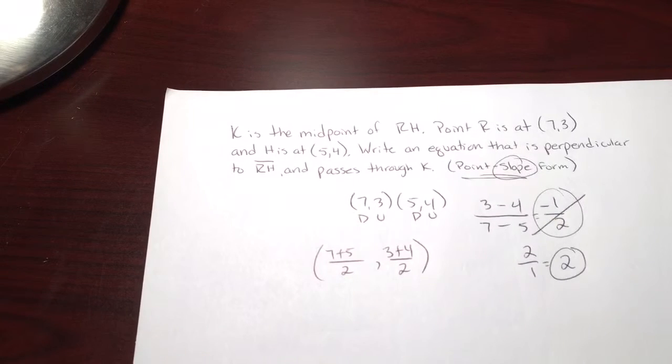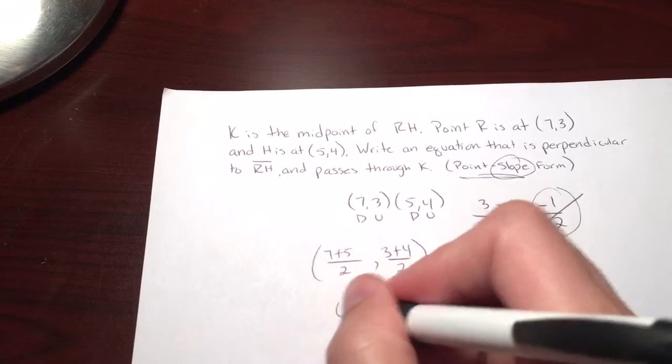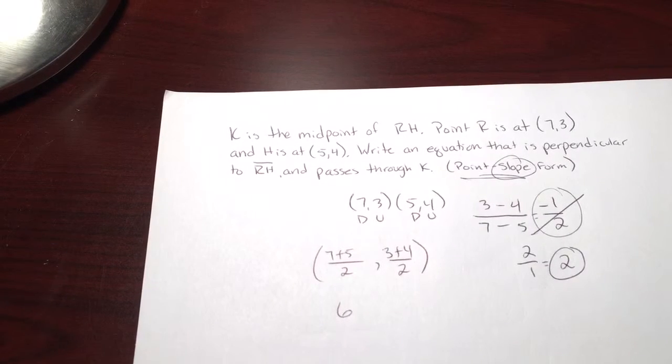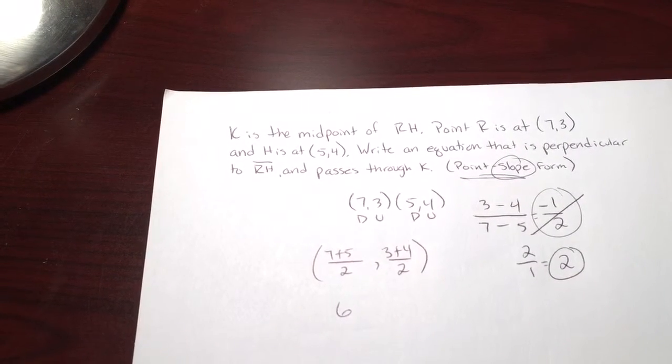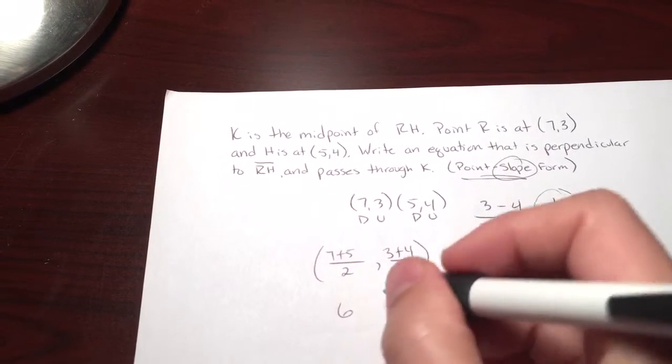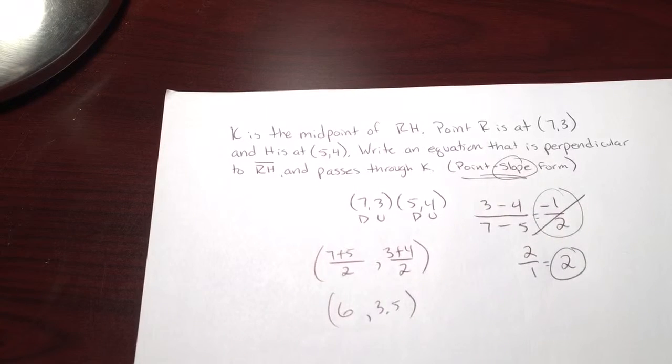7 plus 5 gives 12. Cut that in half, you get 6. 3 and 4, that makes 7. You cut that in half, you're going to get 3.5. It's okay to get a decimal. That's the midpoint.